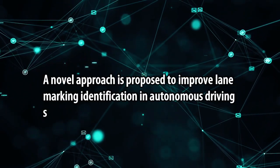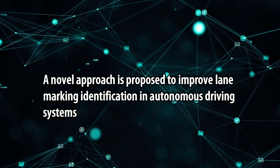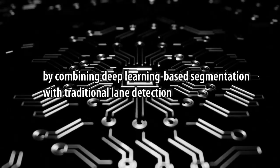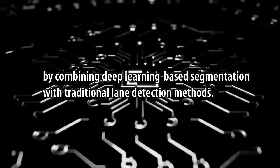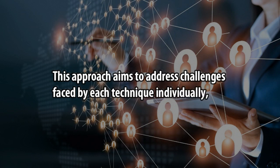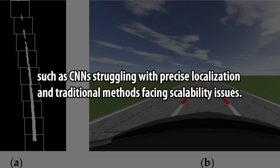A novel approach is proposed to improve lane marking identification in autonomous driving systems by combining deep learning-based segmentation with traditional lane detection methods. This approach aims to address challenges faced by each technique individually, such as CNNs struggling with precise localization and traditional methods facing scalability issues.